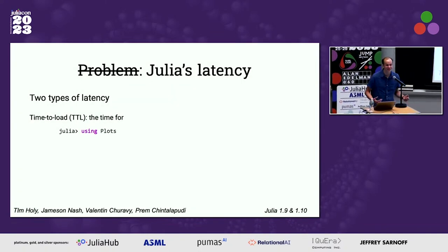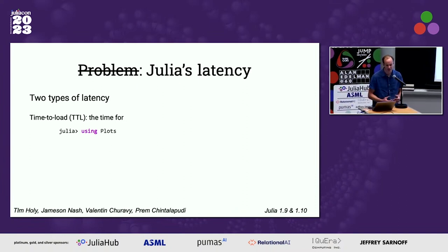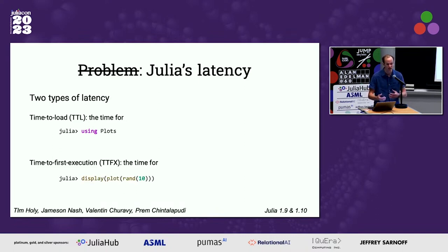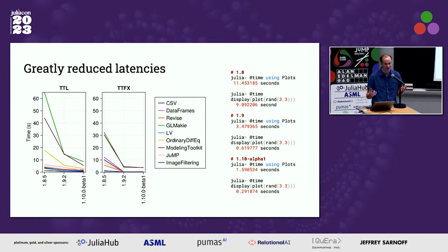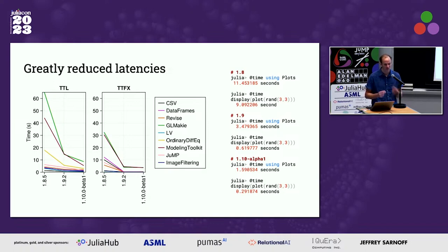Latency has been a really big issue we put a lot of work into. There are two types: time to load packages, and time-to-first-result once packages are loaded. In 1.8, loading Plots took 11 seconds; in 1.10 alpha it's about 1.5 seconds. Once loaded, displaying a plot took nearly 10 more seconds in 1.8; that's now down to 0.3 seconds — almost instant.